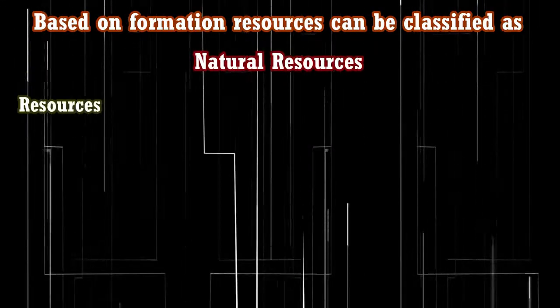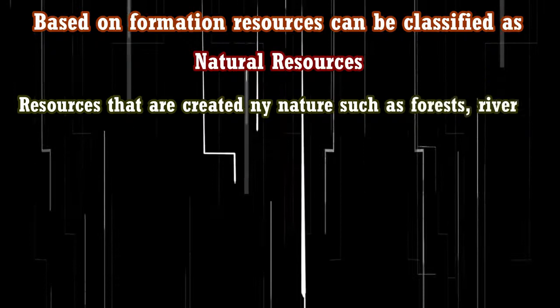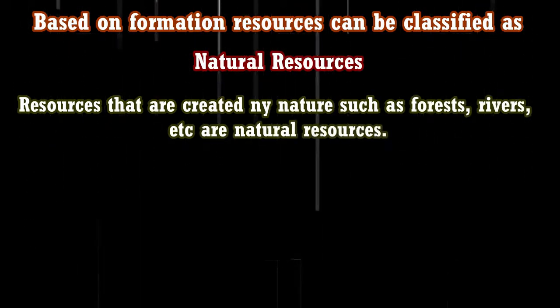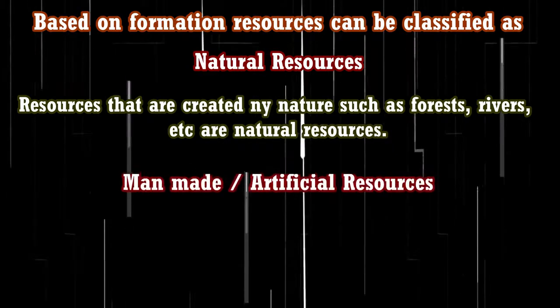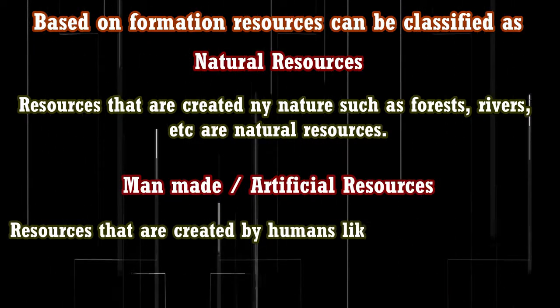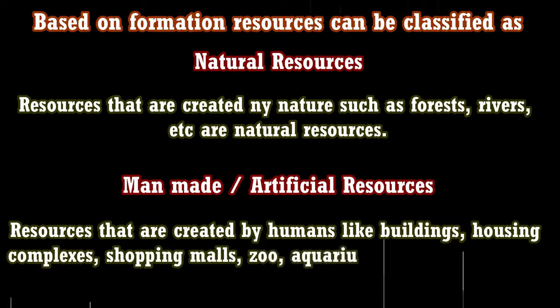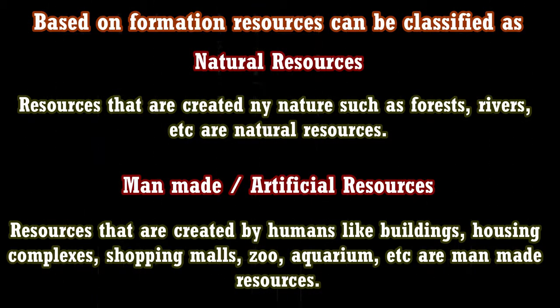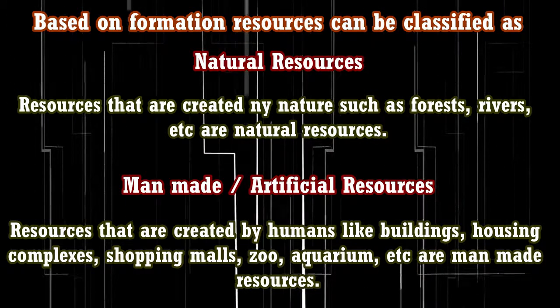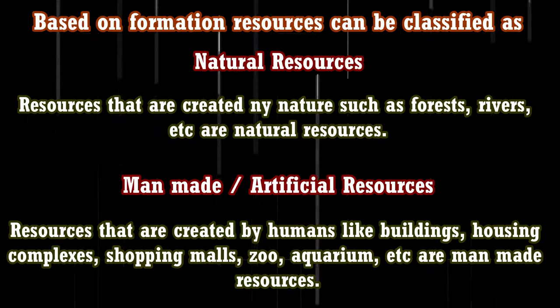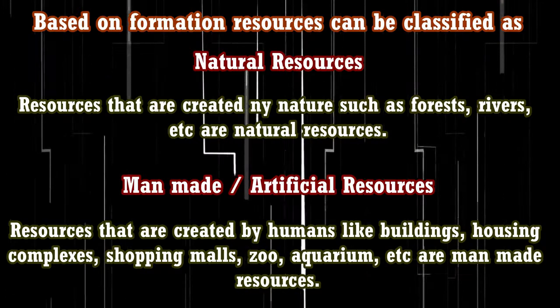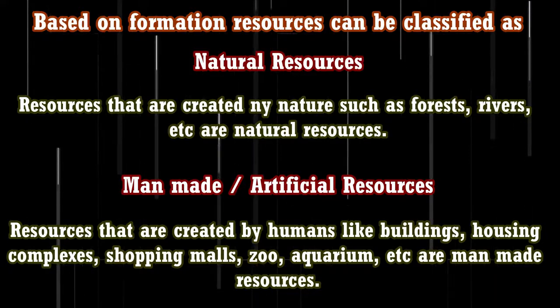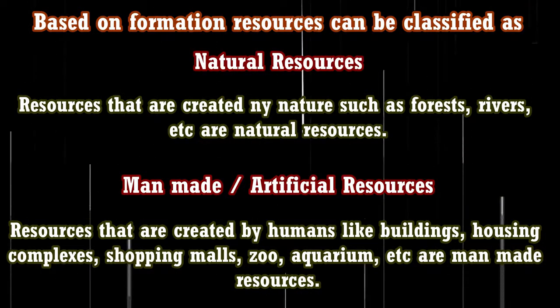On the basis of formation, resources can be of two types: natural and man-made. For example, a normal river nearby is formed by nature — a natural resource — whereas an aquarium at your home, bought and maintained by you, is an artificial or man-made resource. Similarly, a wildlife sanctuary where animals live freely is natural, whereas a zoo or circus is artificial. Caves are natural, while housing complexes are artificial.